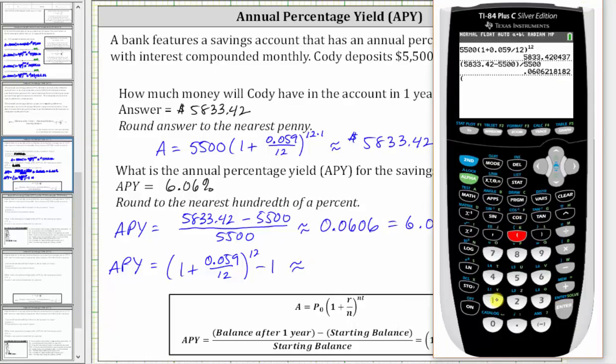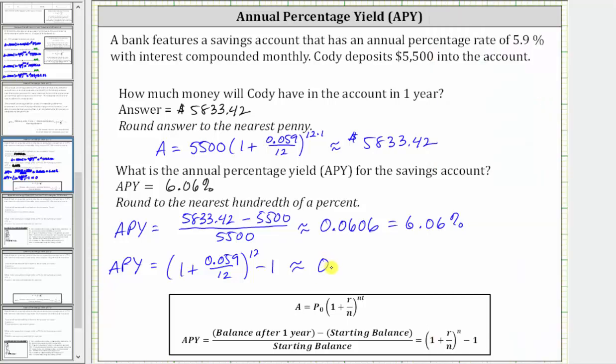We enter one plus 0.059 divided by 12, raised to the power of 12. Now we need to press the right arrow to get out from the exponent position, and then minus one, and enter. Notice how there's a slight difference between these two values, because remember, the 5,833.42 is rounded to the hundredths place value, or to the nearest cent. But to four decimal places, we still have approximately 0.0606, giving us the same percentage of 6.06% for the APY.